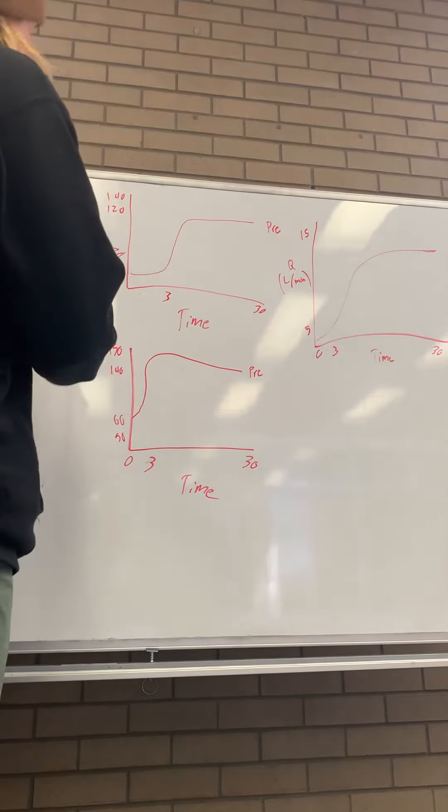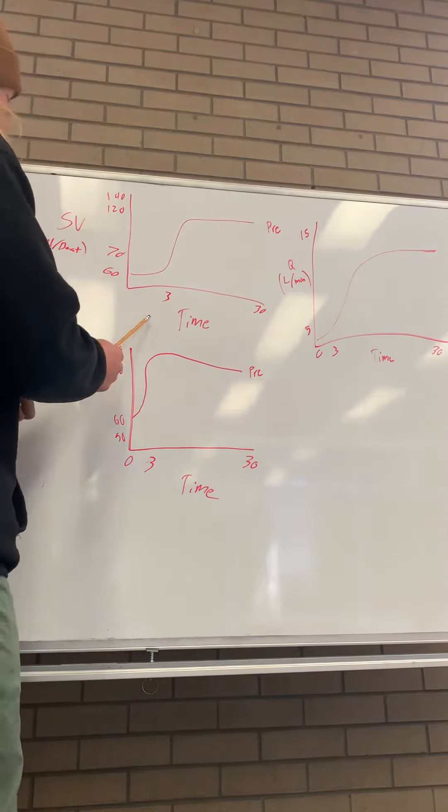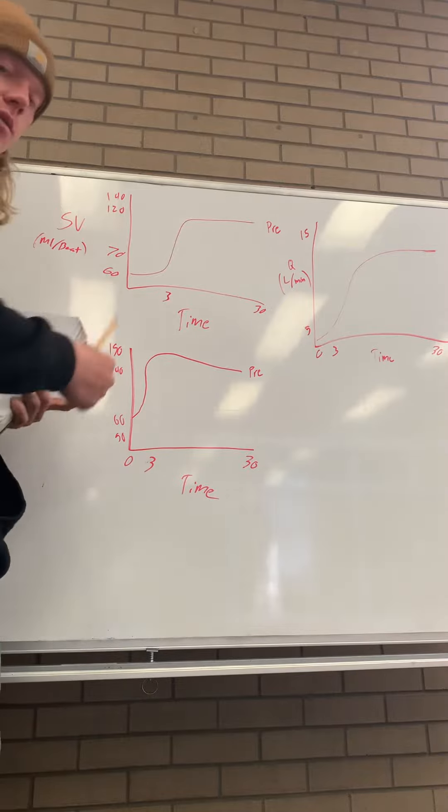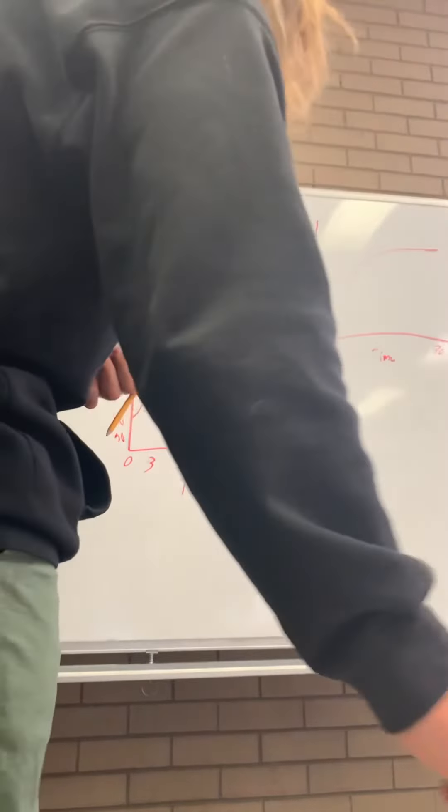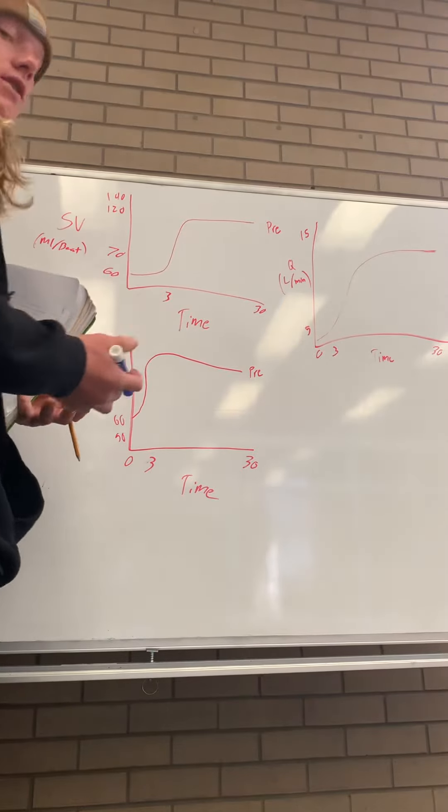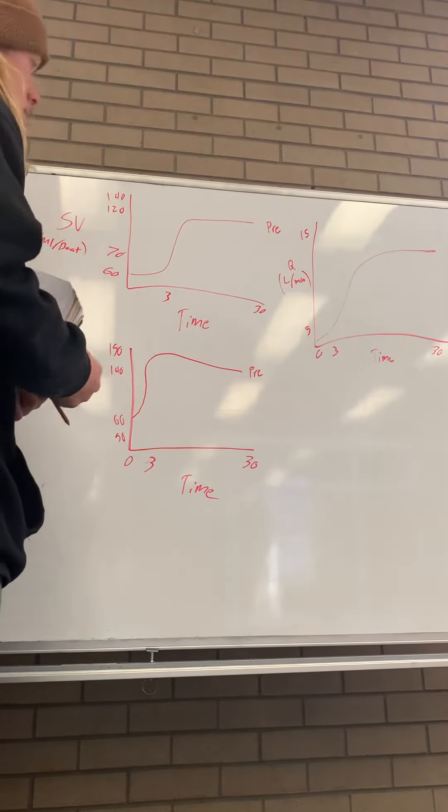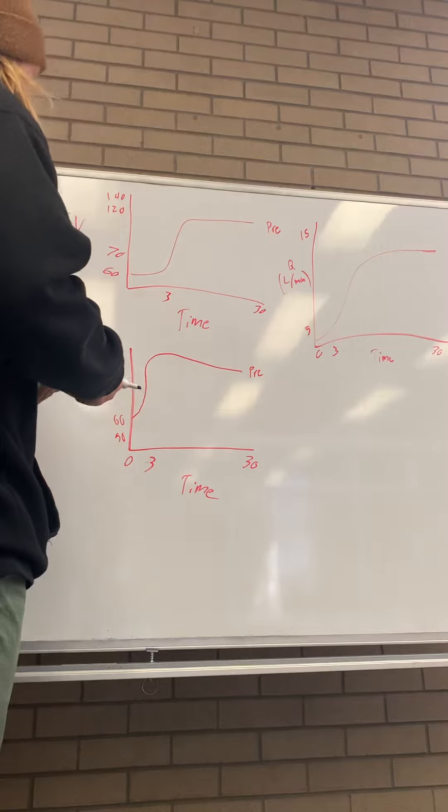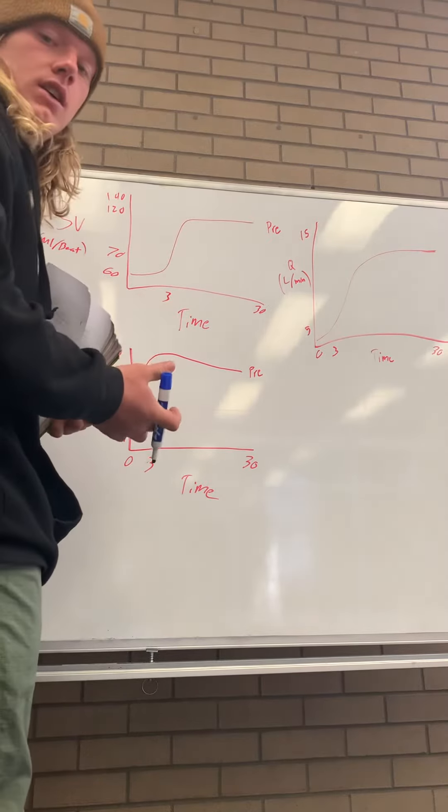This first graph is stroke volume over time, measured in milliliters times beats per minute. When you're a trained person, your stroke volume increases with exercise. You usually have a more powerful heart that's stronger and able to be more efficient per beat.